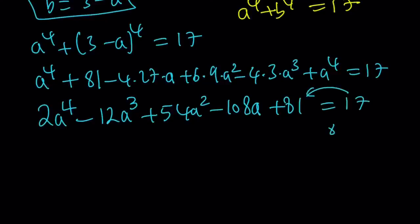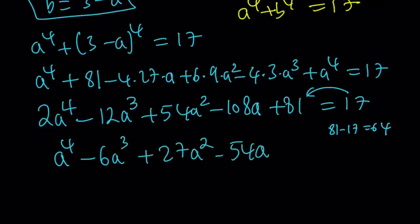A to the fourth plus A to the fourth is going to give me 2A to the fourth minus 12A cubed plus 54A squared minus 108A plus 81 equals 17. Now, when you subtract 17 from 81, you're going to get 64. And guess what? You're going to have a 0 on the right-hand side and everything is divisible by 2. So, let me go ahead and divide everything by 2 to simplify my expression a little bit. So, the numbers are smaller. 64 divided by 2 is 32 and that is equal to 0.